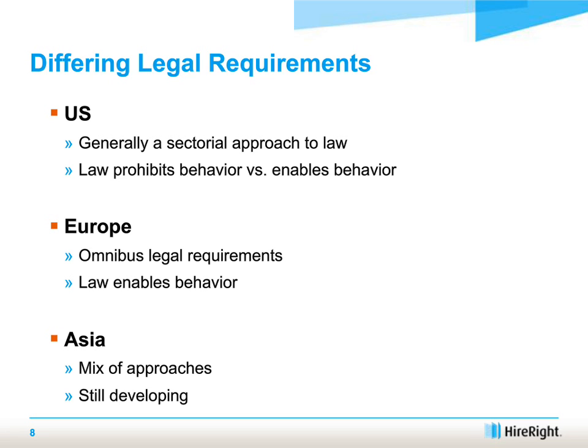The laws in the United States aren't necessarily around personal information generally — they're around things like credit report information, credential information, and education information. So the rules around how to do background checks and employment screening take a different approach. Europe, on the other hand, views things in a more statutory, rules-based regime — you can only do what I tell you you can. It also tends to view information protection as a fundamental human right, so laws in Europe are much more in the omnibus space: one rule covers everything.